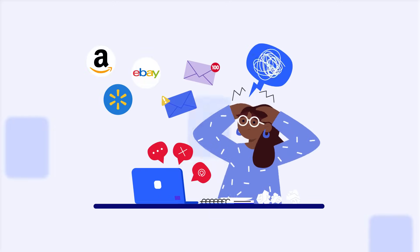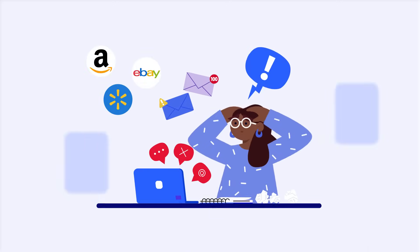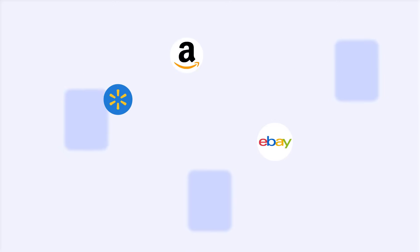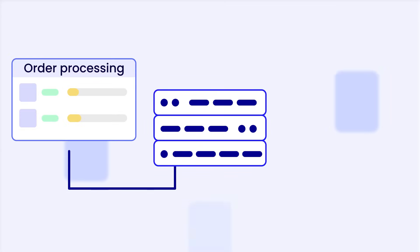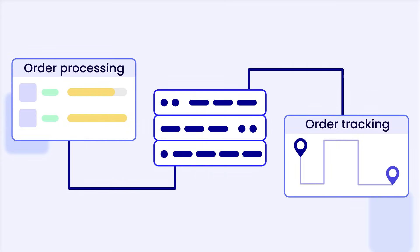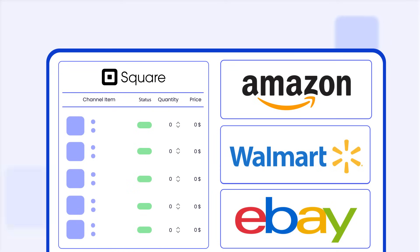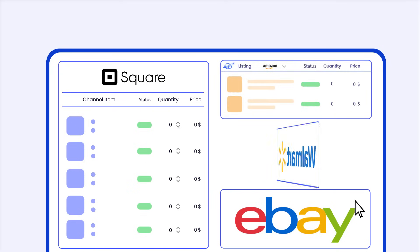Eliminate the hassle of managing multiple sales platforms. Handle all your marketplace orders within one central hub. From order processing to tracking, manage everything smoothly in your Square system. List your extensive product inventory on various channels with just a few quick steps.